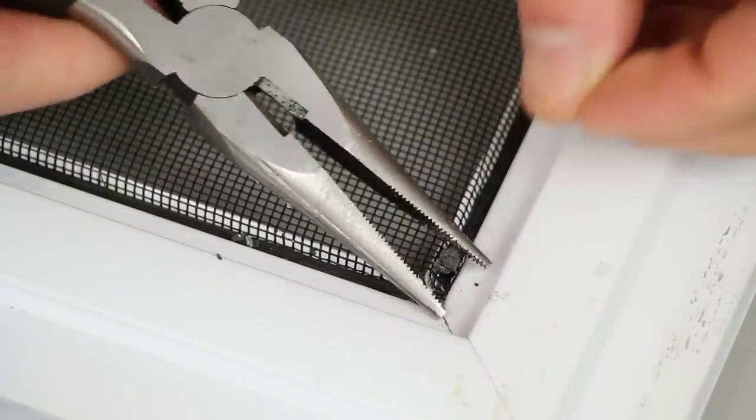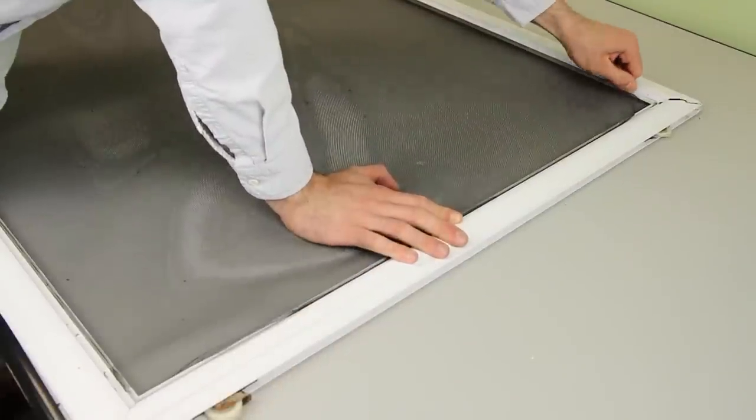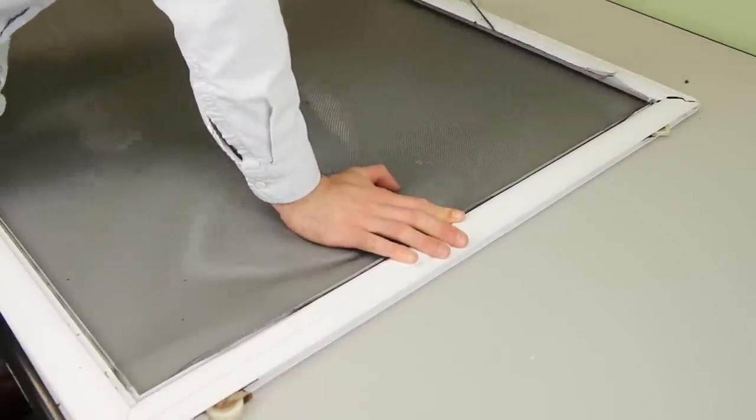Use a utility knife or pair of pliers to lift the spline up and then remove the screen from the door frame. Doing this will allow us to pull the frame apart and replace the corners.